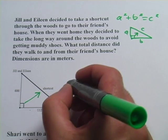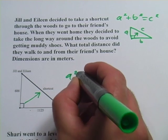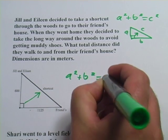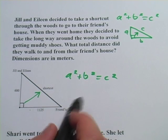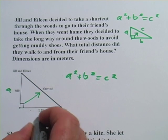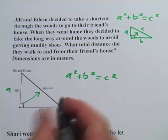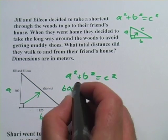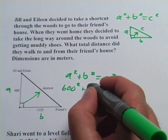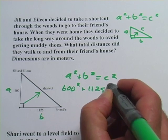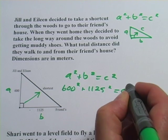Now we can just get out our Pythagorean theorem, a squared plus b squared equals c squared, and say, what can I substitute in here? Well, let's call this side a and this side b. So I can put in 600 squared plus 1125 squared equals c squared.